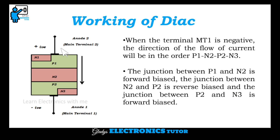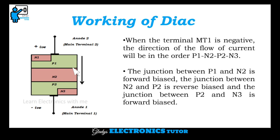About the working of DIARC: when terminal MT1 is negative and MT2 is positive, the direction of the flow of current will be in the order P1, N2, P2, and N3. The junction between P1 and N2 is forward biased.